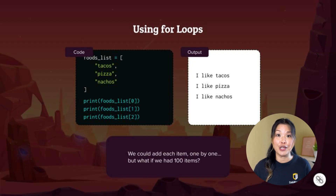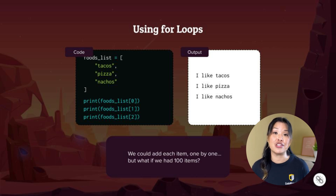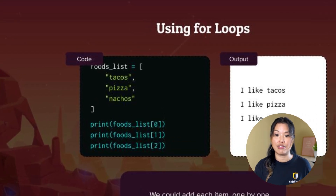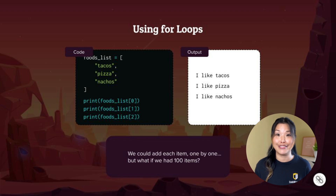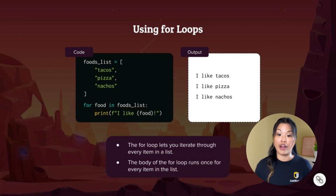In the last video, we talked about lists and we used a list to group some data together, then we accessed the information in the list using an index number. So that code looked like this on the left — we had our foods list and then we said print food_list 0, 1, 2, so we'd print each of those items inside of that list. We could access each item using the index number, but what if there were a hundred items? We'd have to write this out at least a hundred times — that would be a lot of code. Instead of going through all that, we're going to use a for loop to go through each item in the list automatically for us.